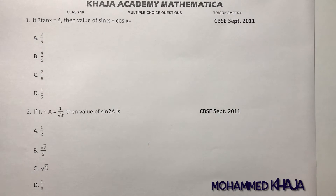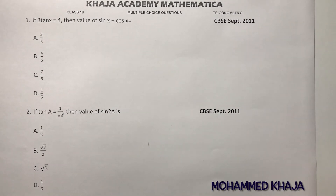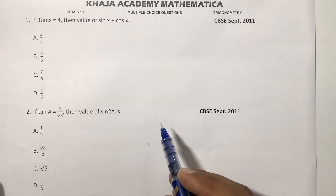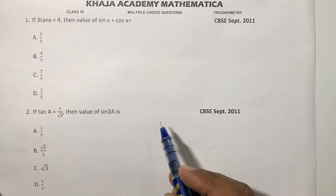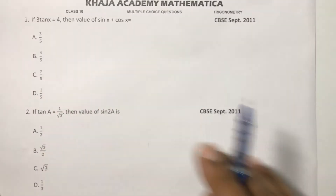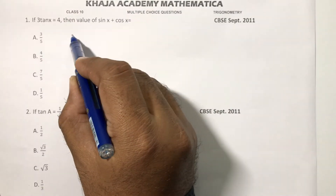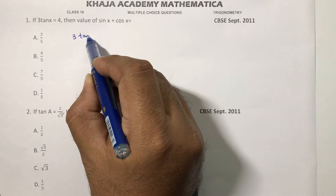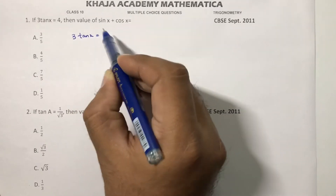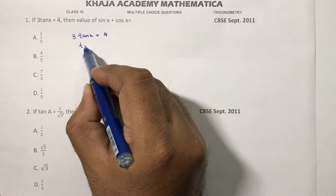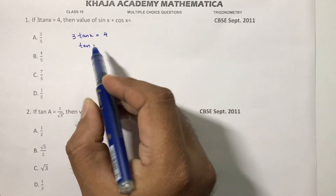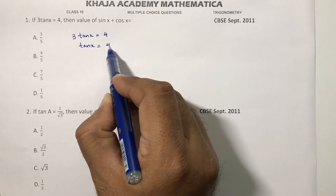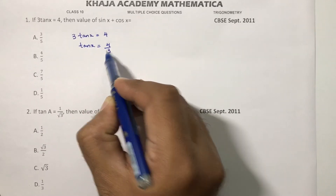If 3 tan x equals 4, then find the value of sin x plus cos x. Here 3 tan x equals 4, so tan x equals 4 by 3.